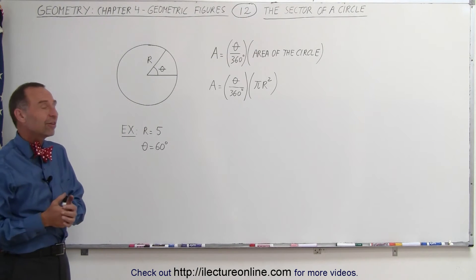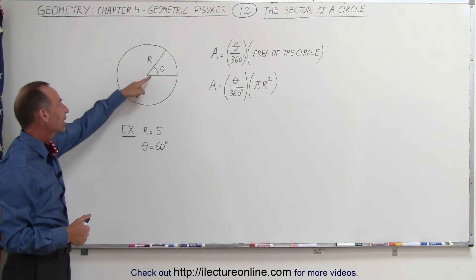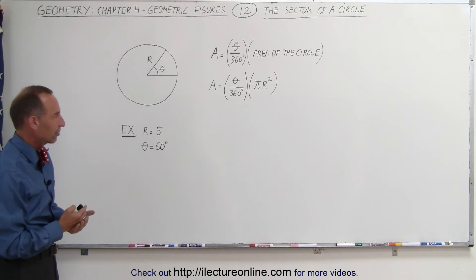So let's use an example. Let's say that we have the radius of the circle to be equal to 5 and that the angle here is equal to 60 degrees, and we want to find the area of that sector.